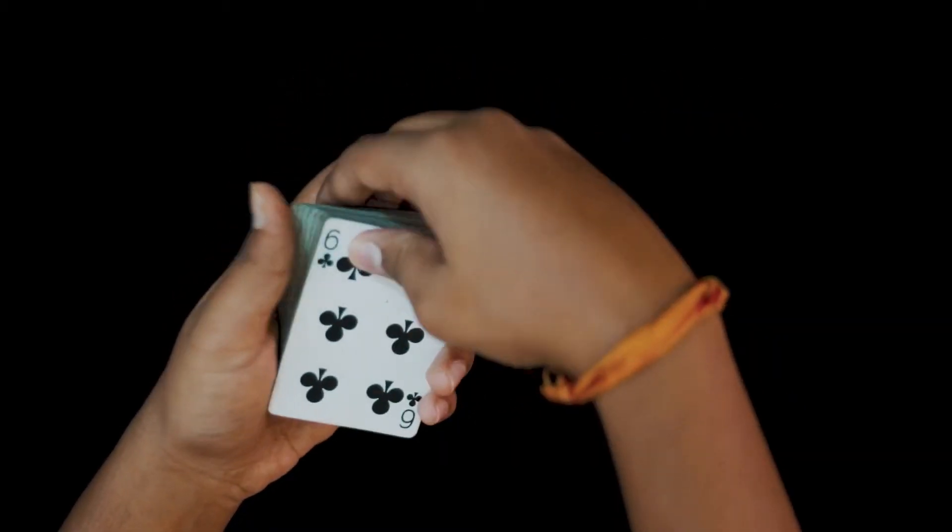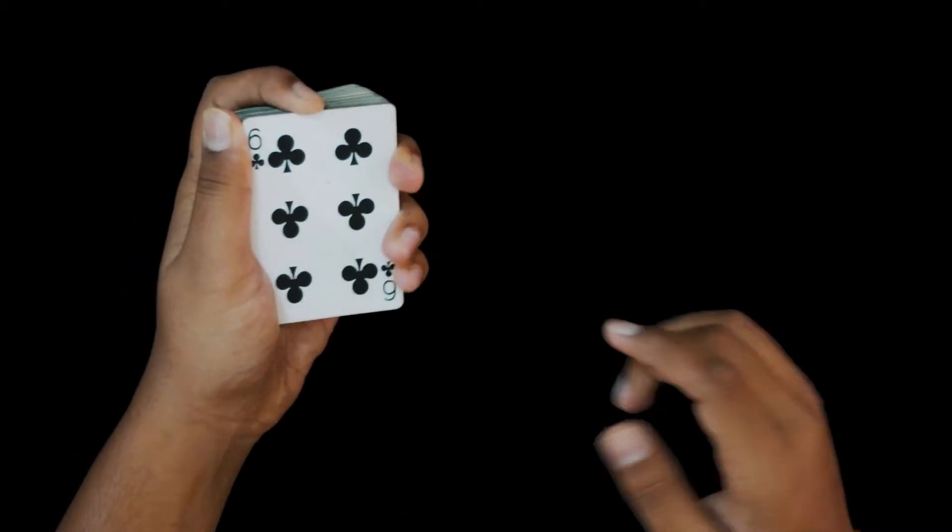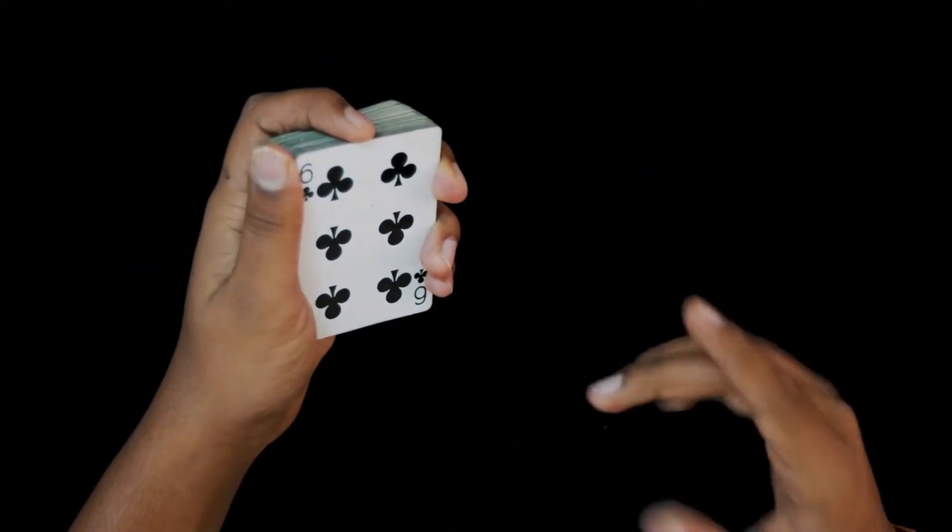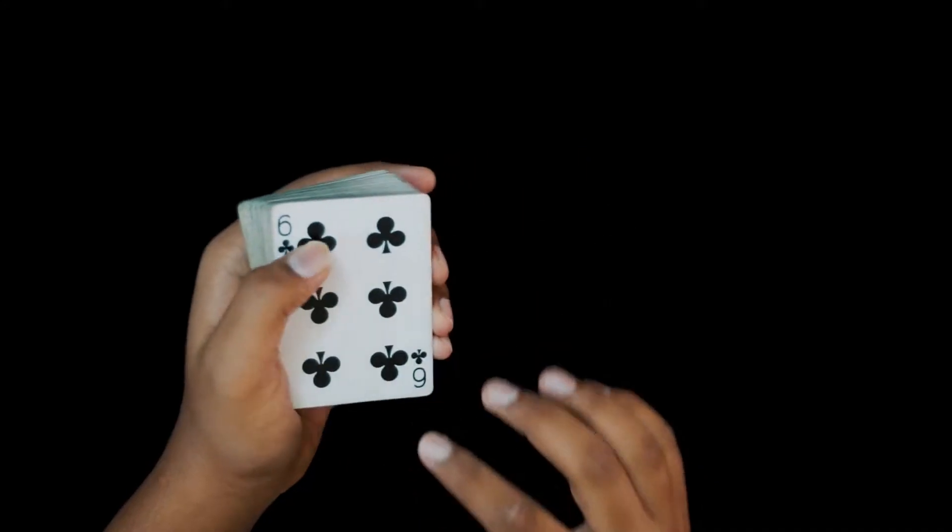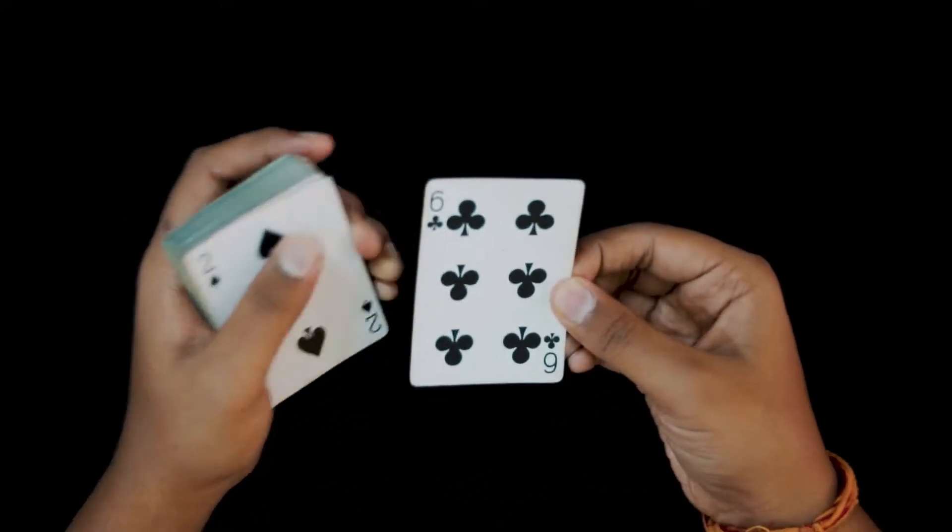So what you're gonna do here is you're gonna hold the deck face up in your hand and you're gonna start dealing the piles. What's gonna happen is you're gonna see the first card, in this case the 6 of clubs.